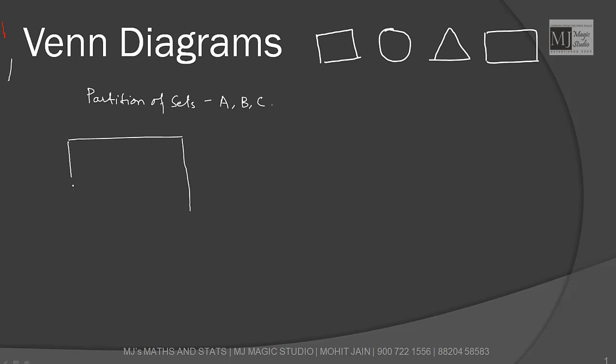This is the universal set and here we have three sets A, B, and C. Let A represent number of students who have taken up subject A in a college, B represent students in subject B, and C represent students studying subject C in a particular university. So this is the university.